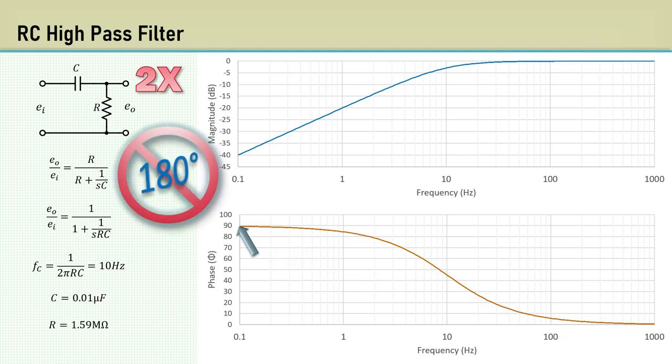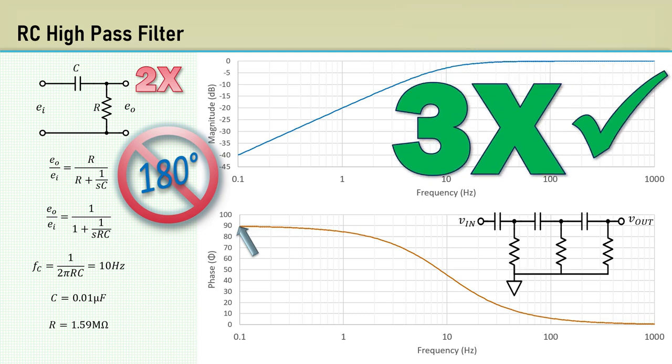Wrong. Phase shift only approaches 90 degrees. The response is asymptotic, so it never really reaches 90 degrees. That's why three sections are required to get 180 degrees. Each contributes 60 degrees of phase shift.